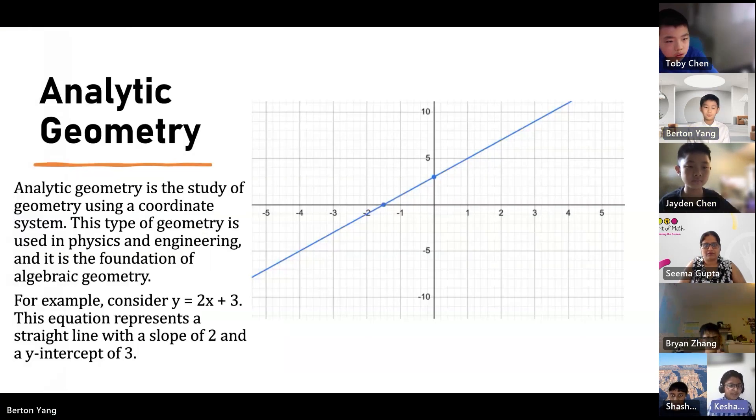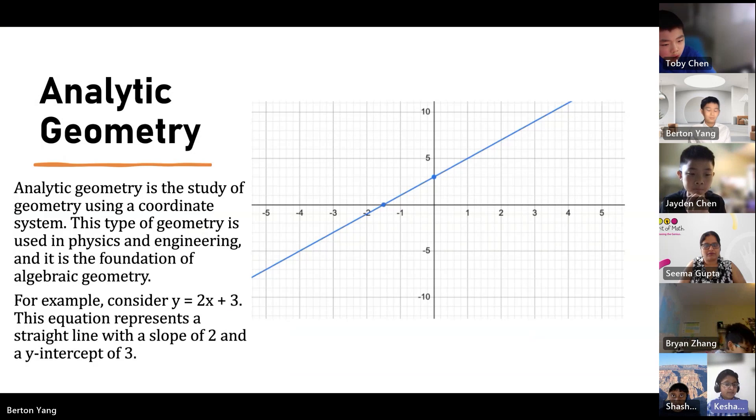Analytic geometry. Analytic geometry is a study of geometry using a coordinate system. This type of geometry is used in physics and engineering and is the foundation of algebraic geometry. For example, consider y equals 2x plus 3. This equation represents a straight line with a slope of 2 and a y-intercept of 3.